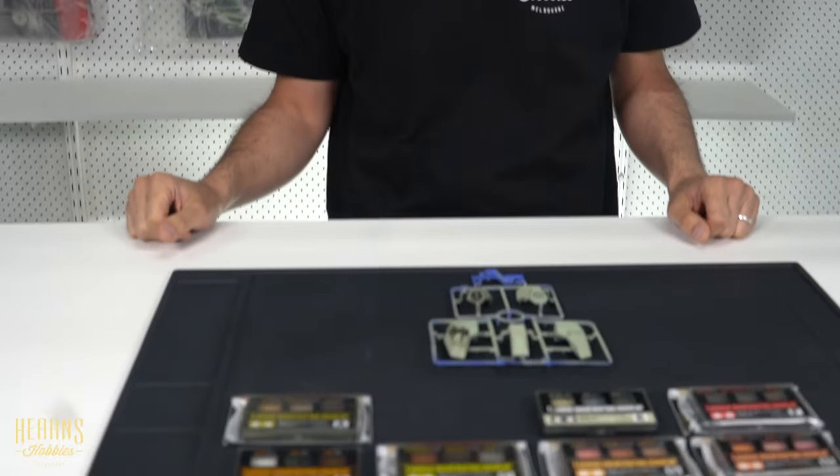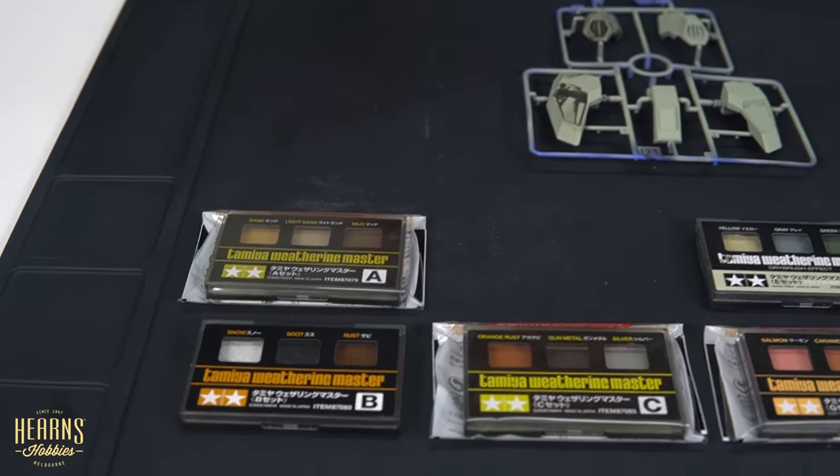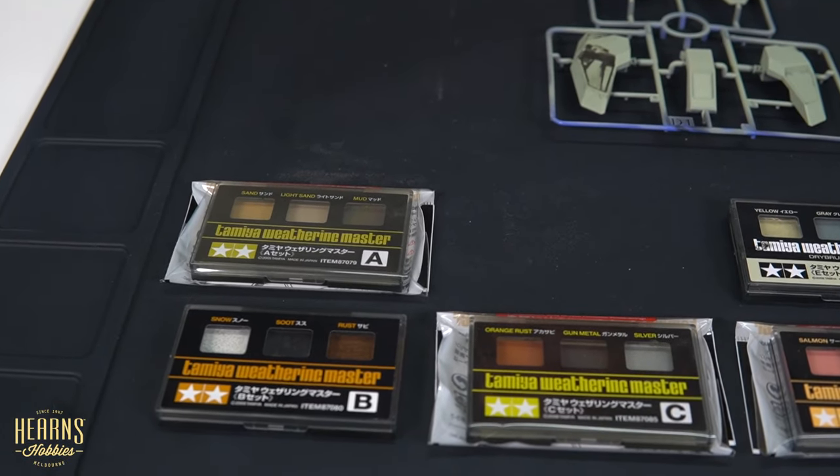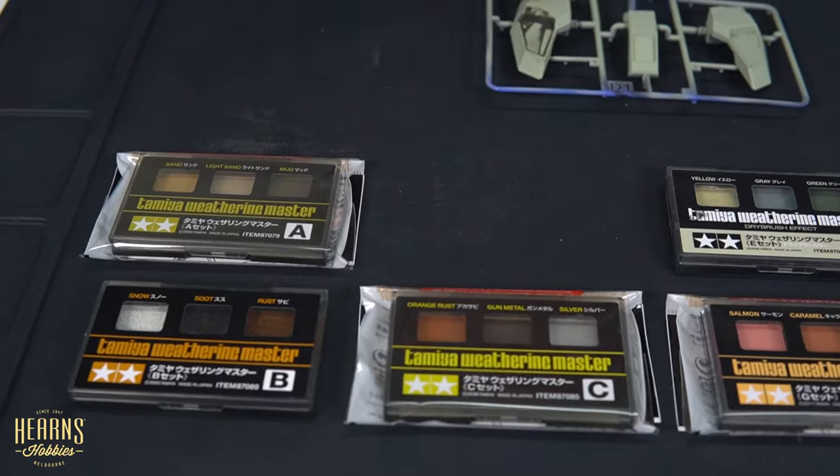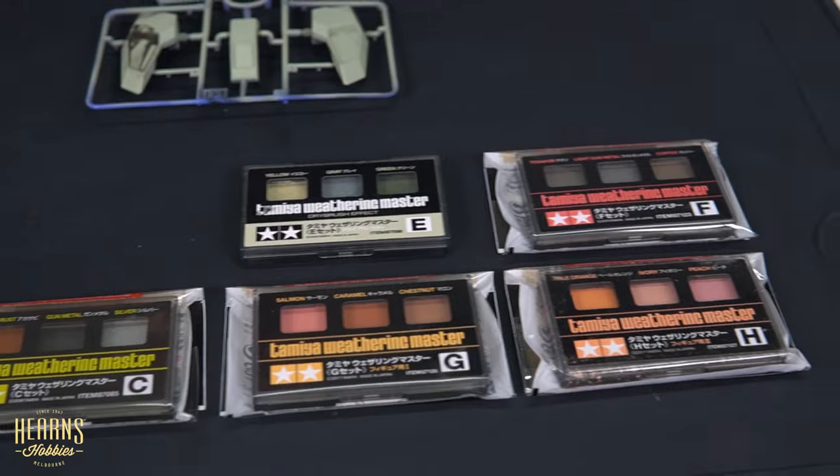Right here I've got a selection of the Tamiya Weathering Master packs. They're in letter type configurations. Unfortunately we're missing one, the D pack, but they've got A, B, C, D, E, F, G, H.